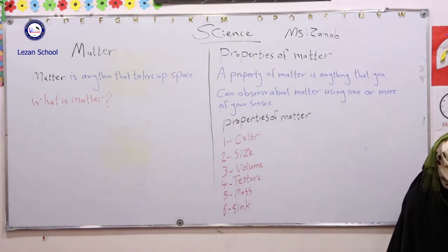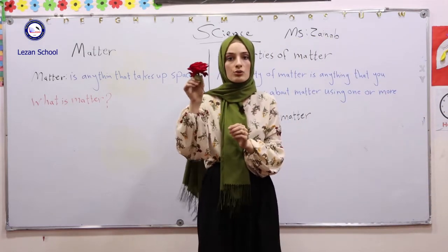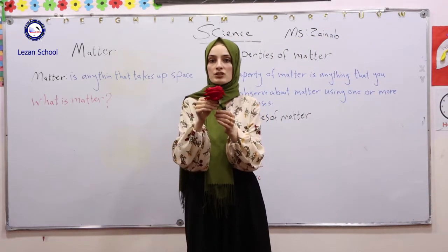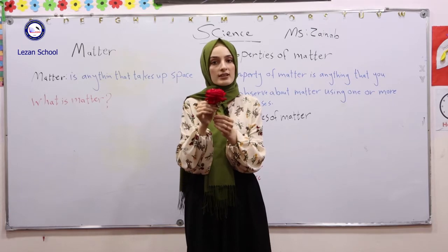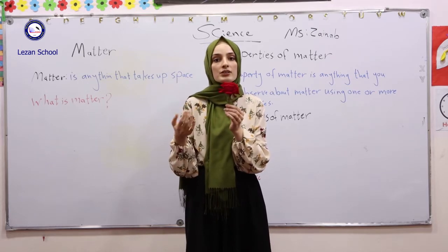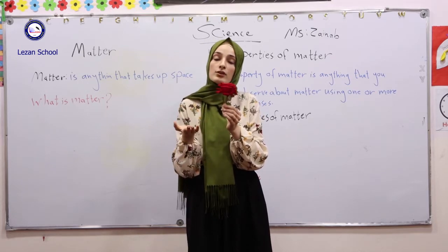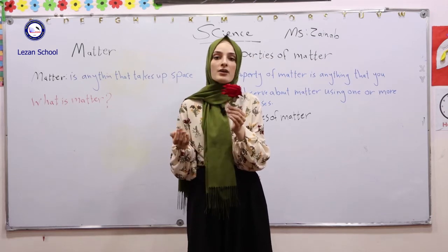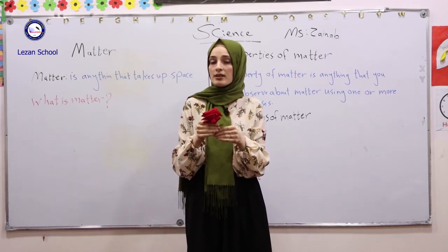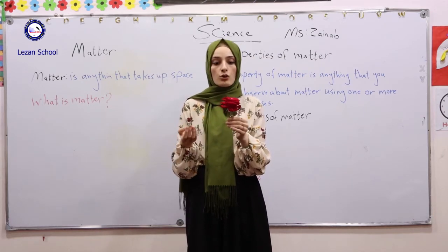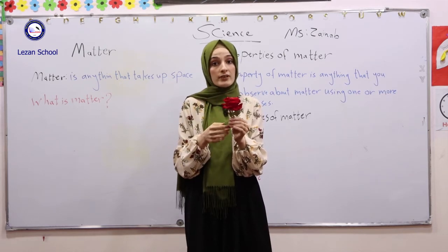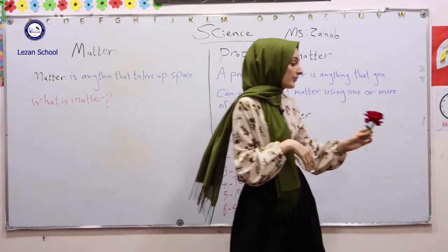And we have a flower here — this rose. You can observe the properties of it. For example, if you use the sense of smell, you can observe the nice smell of this flower. And if you use the sense of sight, you can observe the color of it; it is red.